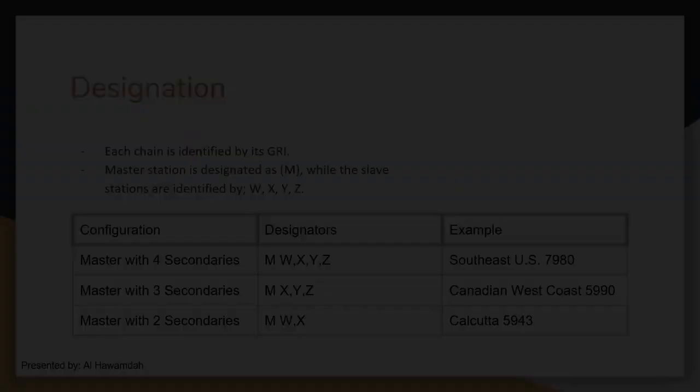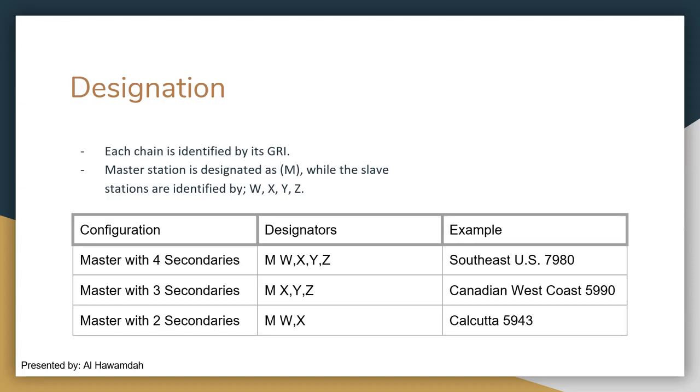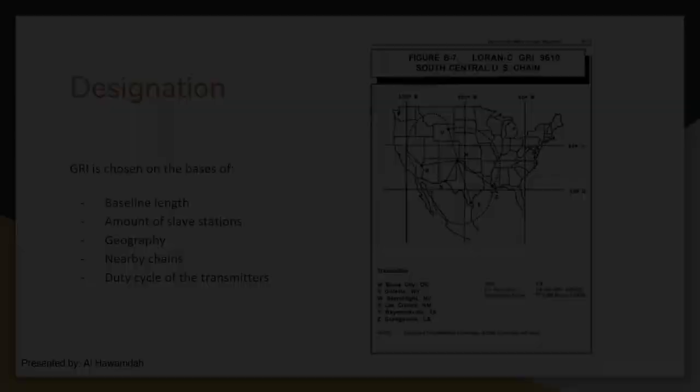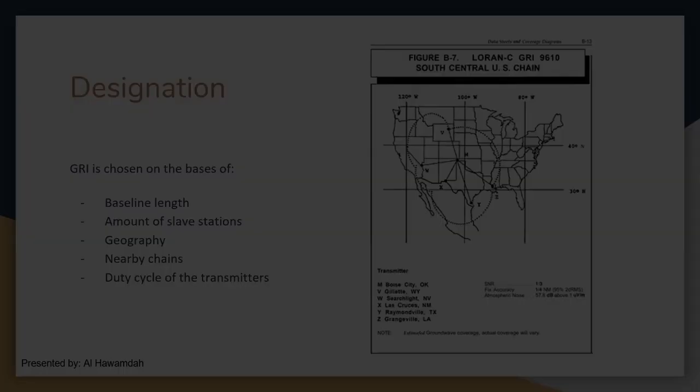The GRI designator is a GRI divided by 10, used as a symbol to identify and designate the LORAN chain. For example, the Southeast US 7980 has a GRI of 79,800 microseconds, almost 0.08 of a second. Within the chain, the master is designated as M, while the secondaries are identified by the letters Whiskey, X-Ray, Yankee, and Zulu.